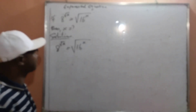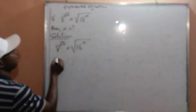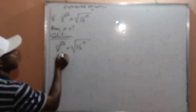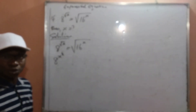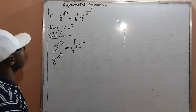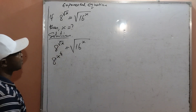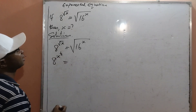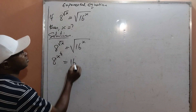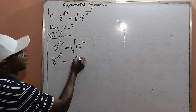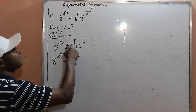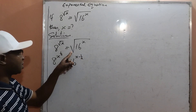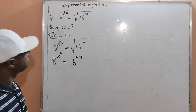Starting from the left hand side, I have 8 raised to the power of x, then raised to the power of 1 over 2 because of the square root sign. And from the right hand side, I can write it as 16 raised to the power of x, then multiplied by 1 over 2, because of also the square root sign.